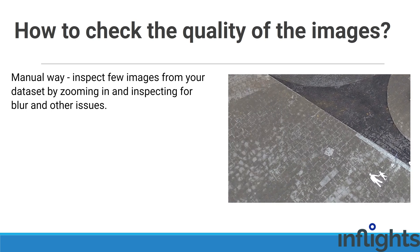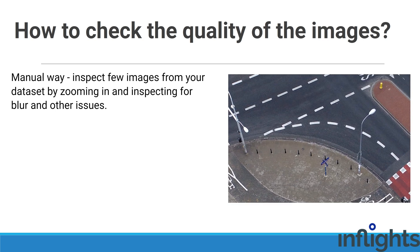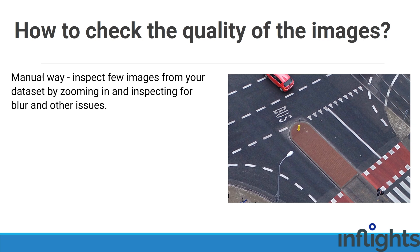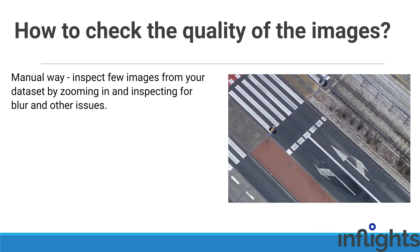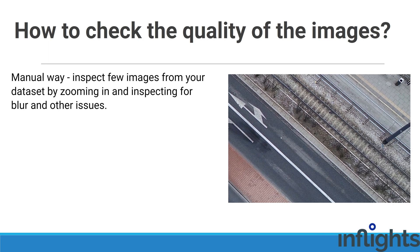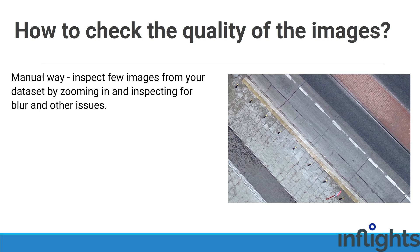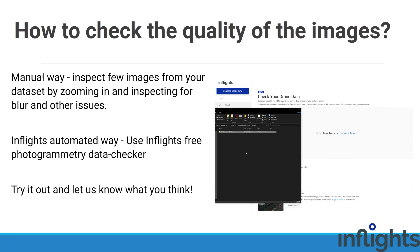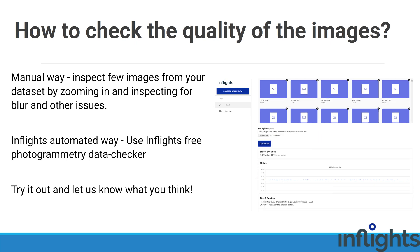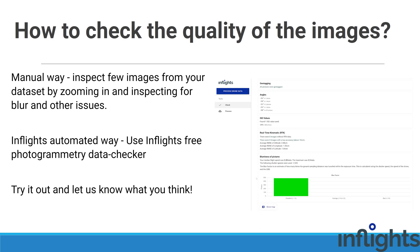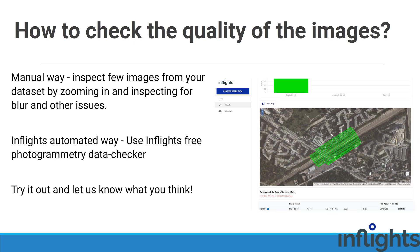How to check some of those features? The processing software looks at images at the pixel level. To check quality on your computer, just zoom in all the way and check for softness, blur, and noise — especially on the sides of your images. Inflight's free photogrammetry data checker measures the blur parameter automatically for drone mapping projects. It also marks blurry images on the map.